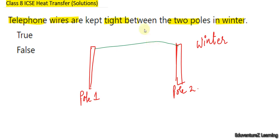If we are not making the wires tight, suppose we are making the wires like this, then during summer it will expand, its length will increase and it will become more down. The length will be increased and it may touch the ground also.